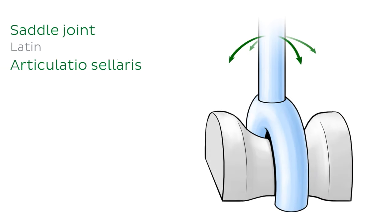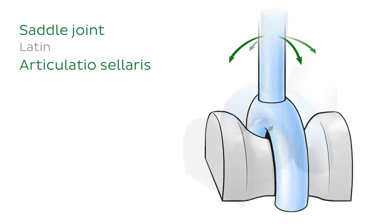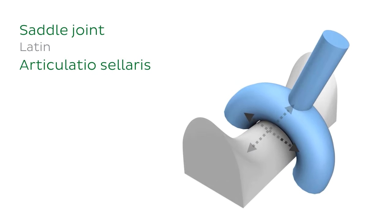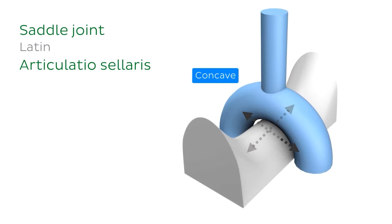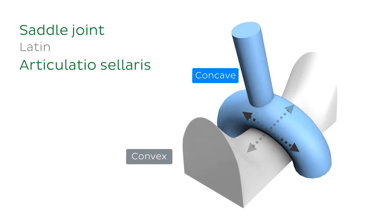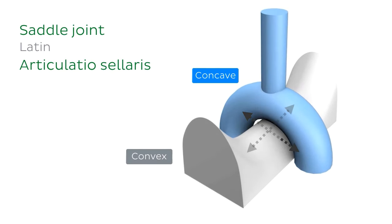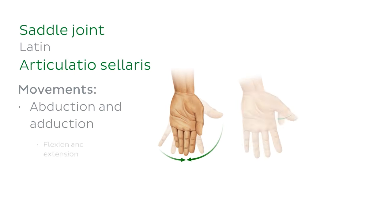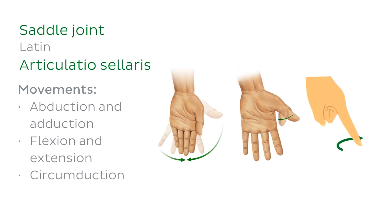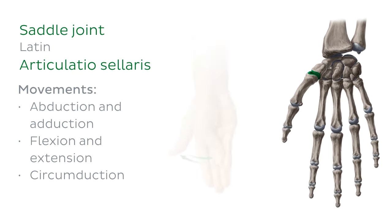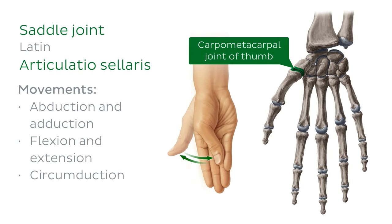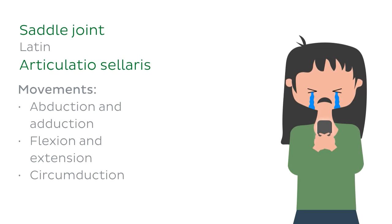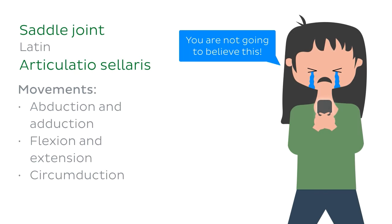Similarly to the condylar joint, the saddle joint is a biaxial joint. In this particular joint, the bones involved meet at the concave articular surface of one bone and the convex articular surface of the other, forming the saddle-shaped articulation. The movements that take place at this joint are abduction, adduction, flexion, extension, and circumduction. An example is the carpometacarpal joint of the thumb, which is the joint necessary for the opposition of the thumb — this is the joint that allows you to text your bestie about how bad your day was.